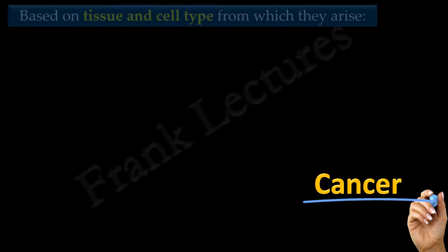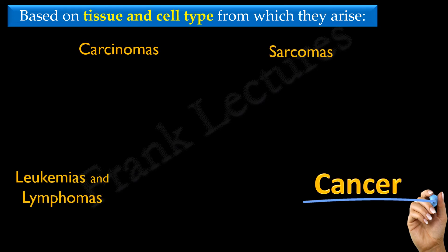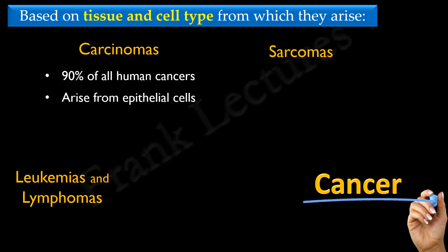Cancer has been classified on the basis of the tissue and cell type from which they arise. There are three main categories: carcinomas, sarcomas, and leukemias and lymphomas. Approximately 90% of all human cancers are carcinomas. They arise from epithelial cells — the cells that cover external and internal body surfaces. Most cell proliferation in adults occurs in epithelial tissues, and in the human body these tissues are most likely to be exposed to the physical and chemical damage that favors the development of cancer. Examples include lung, breast, and colon cancer.